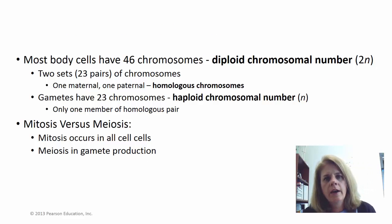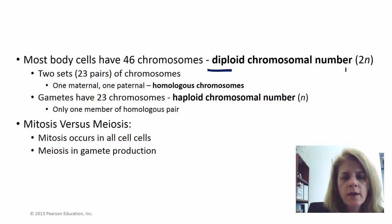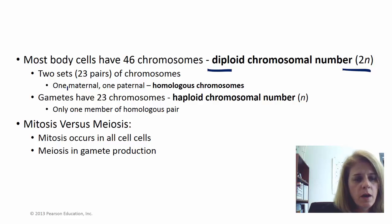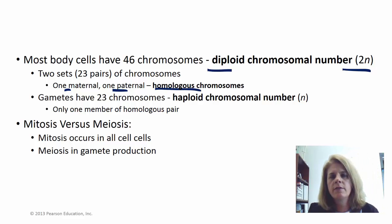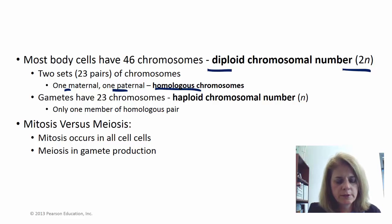These somatic cells, your body cells, have 46 chromosomes and we say that's diploid — meaning you have two copies of every gene, one from your mom and one from your dad. We say they're homologous — they're the same gene. For example, you have the gene for eye color from your mom and the gene for eye color from your dad.